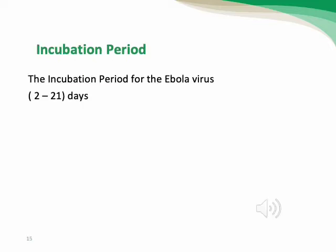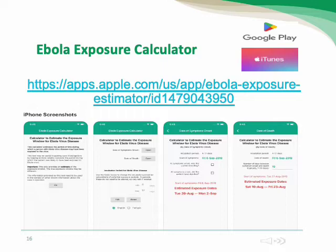The incubation period of Ebola virus disease ranges from 2 to 21 days. The CDC has posted an Ebola Exposure Calculator application, available via Google Play or iTunes, developed by the CDC in collaboration with the Johns Hopkins Applied Physics Laboratory. It was designed for field staff with variable levels of Ebola education to calculate exposure timelines.